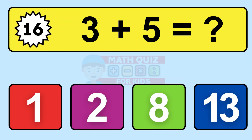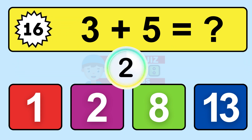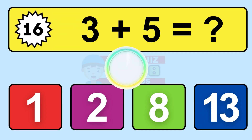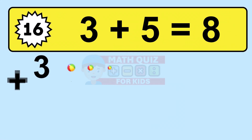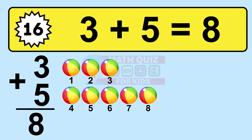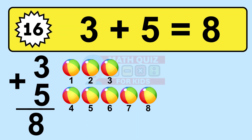Question sixteen: 3 plus 5 equals what? So the answer is 3 plus 5 is 8. Let's count it. 1, 2, 3, 4, 5, 6, 7, 8.